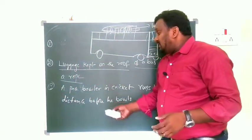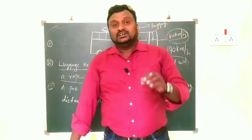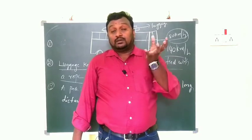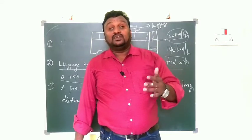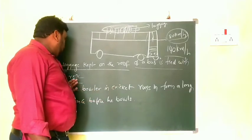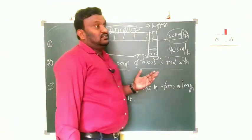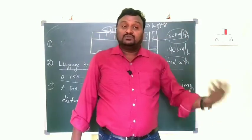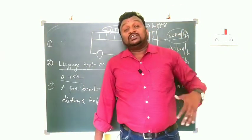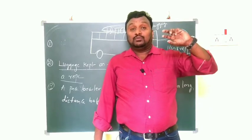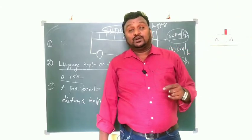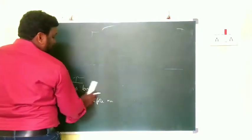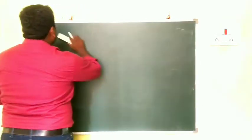So these three are the applications of Newton's laws. First: when a carpet is beaten with a stick, the dust particles come out because of inertia of rest. Second: luggage on the roof of a bus must be tied with a rope because of inertia of motion — when the bus stops, the luggage would otherwise fall. Third: a fast bowler runs from a long distance to give more velocity and momentum to the ball. In the next video I will explain some problems from your textbook.